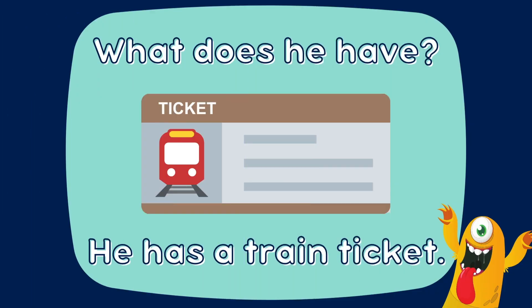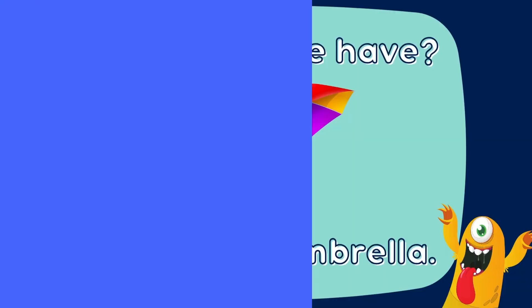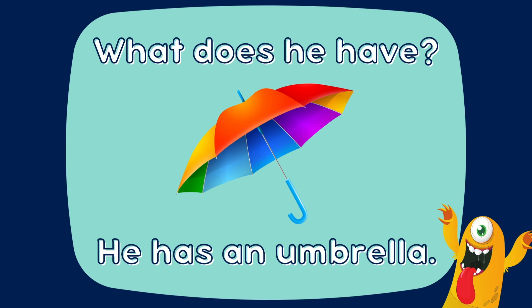What does he have? He has a train ticket. What does he have? He has an umbrella.